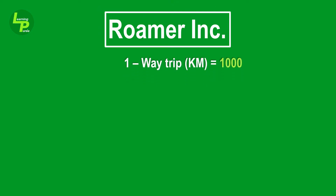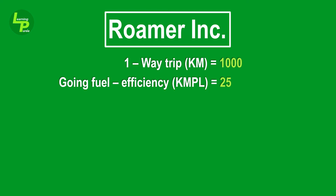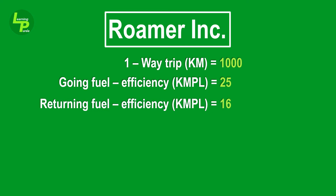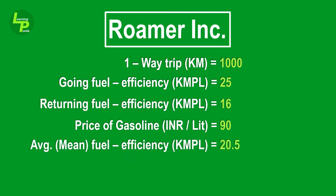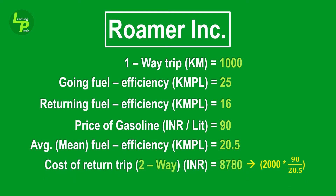Moving ahead to the next example, we have a US rental cab hailing service, Roma Inc., trying to ascertain a price to provide long distance rides in India. For a specific trip from point A to point B in India, the distance travelled is about 1000 km. They observed a fuel efficiency of 25 km to a liter of gasoline during the onward journey, and the return trip clocked 16 km to a liter. At prevailing prices of 90 Indian rupees to a liter, if we take an arithmetic average of the fuel efficiency, it comes to 20.5 km per liter, making the total cost of the journey 8780 Indian rupees.